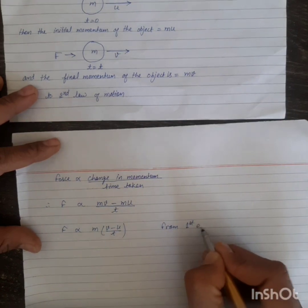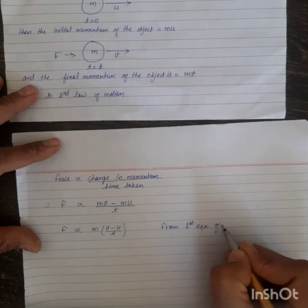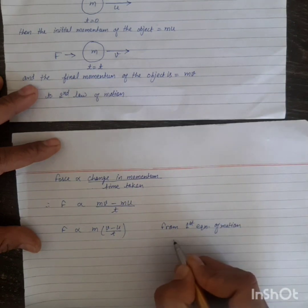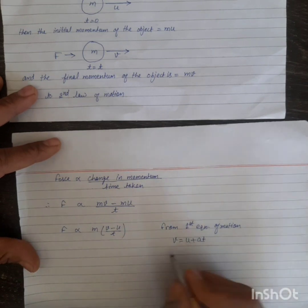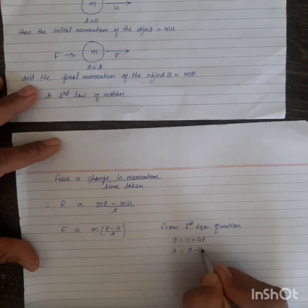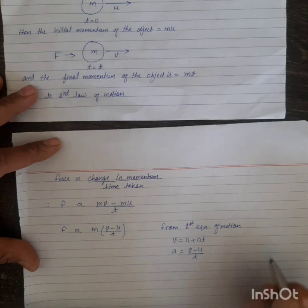From first equation of motion, v equals u plus at, so a equals (v minus u) upon t.